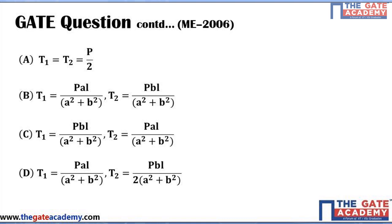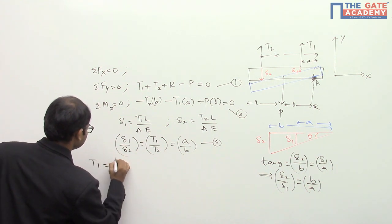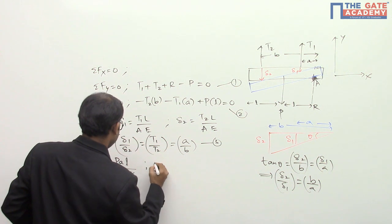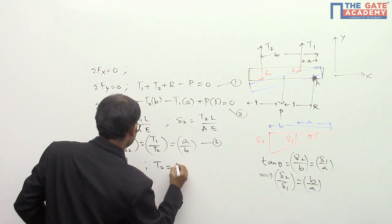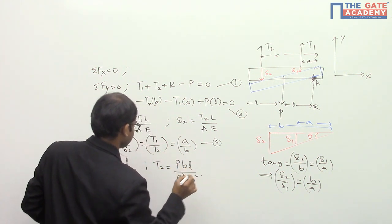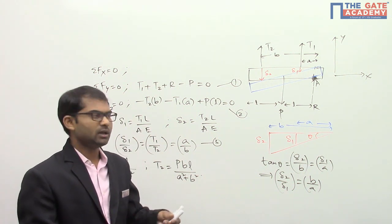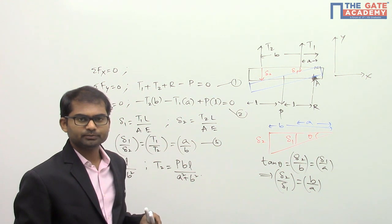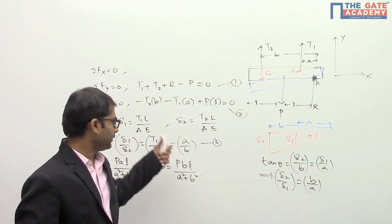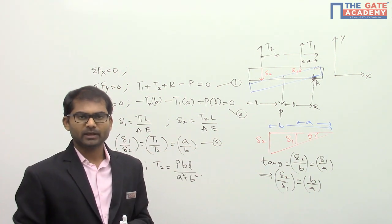The final answers are T1 = P·a·L / (a² + b²) and T2 = P·b·L / (a² + b²). The key takeaway is that once you correctly derive the compatibility condition, the rest is simple mathematics. Thank you so much everyone.